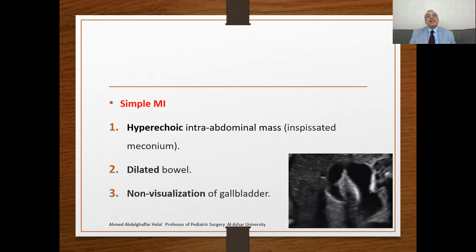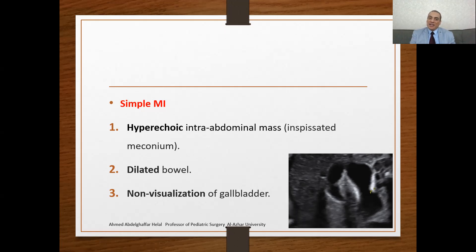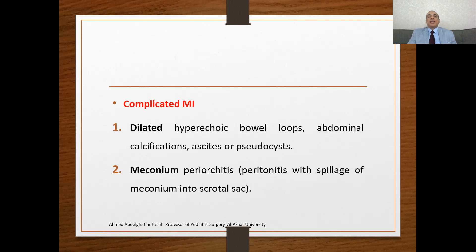The characteristic finding in prenatal ultrasound in a case of simple meconium ileus will be a hyperechoic intra-abdominal mass — this hyperechogenicity is related to the presence of inspissated meconium. There will also be dilated bowel loops with hyperechoic or whitish structures. Non-visualization of the gallbladder is also a prenatal diagnostic criterion. On the other hand, in a case of complicated meconium ileus, there will be dilated hyperechoic bowel loops, plus maybe abdominal calcification, ascites, or giant pseudocyst formation — related to intrauterine perforation. There is also a finding called meconium periorchitis: when peritonitis occurs, spillage of meconium to the scrotal sac may lead to formation of periorchitis, diagnosed by prenatal ultrasound.